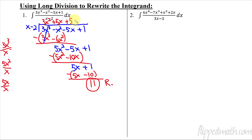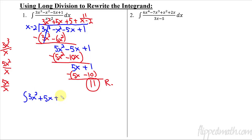The remainder is written as plus 11 over the divisor x minus 2. So we can now rewrite the integral using this answer: 3x² plus 5x plus 5 plus 11 over (x minus 2), all with respect to x. Now this is something I can take the integral of now that I've done the long division.